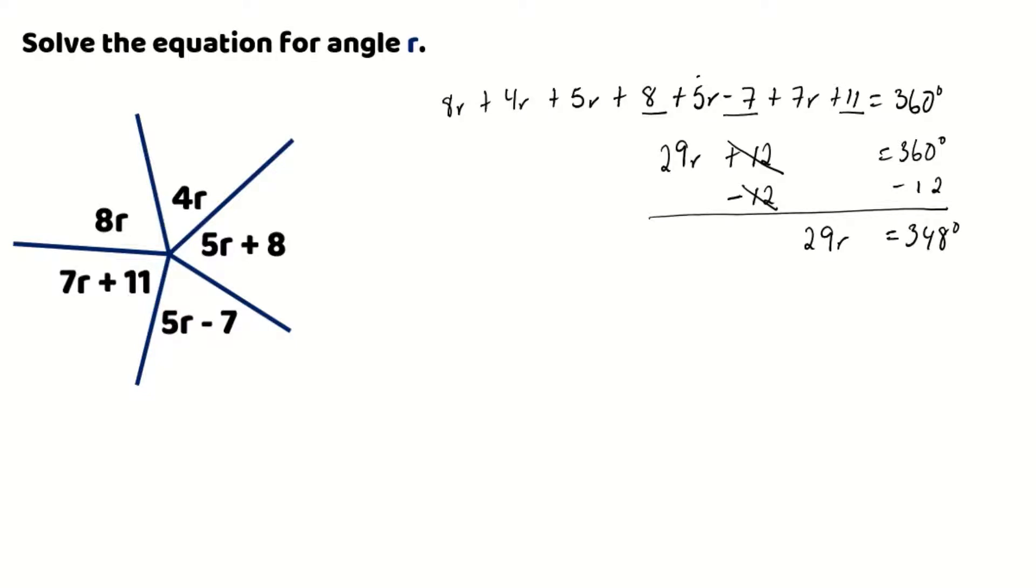Now we're going to perform our one-step multiplication rules where we're going to divide both sides of our equation by 29. This is to get our variable r by itself on one side of the equation. So 29 divided by 29 will leave us with just r, and when 29 divides into 348 degrees, we're left with 12 degrees.